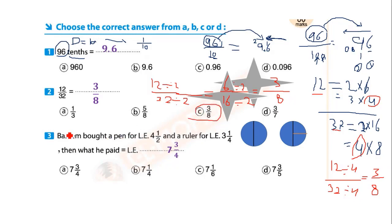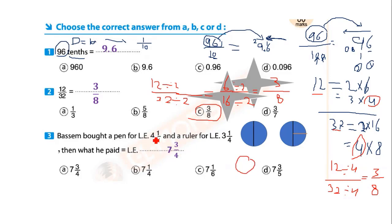Number three: a bag costs four and a half Egyptian pounds, and a ruler costs three and a quarter pounds. Four and a half plus three and a quarter — four is a whole, three is a whole. Make four plus three equals seven as the whole number.